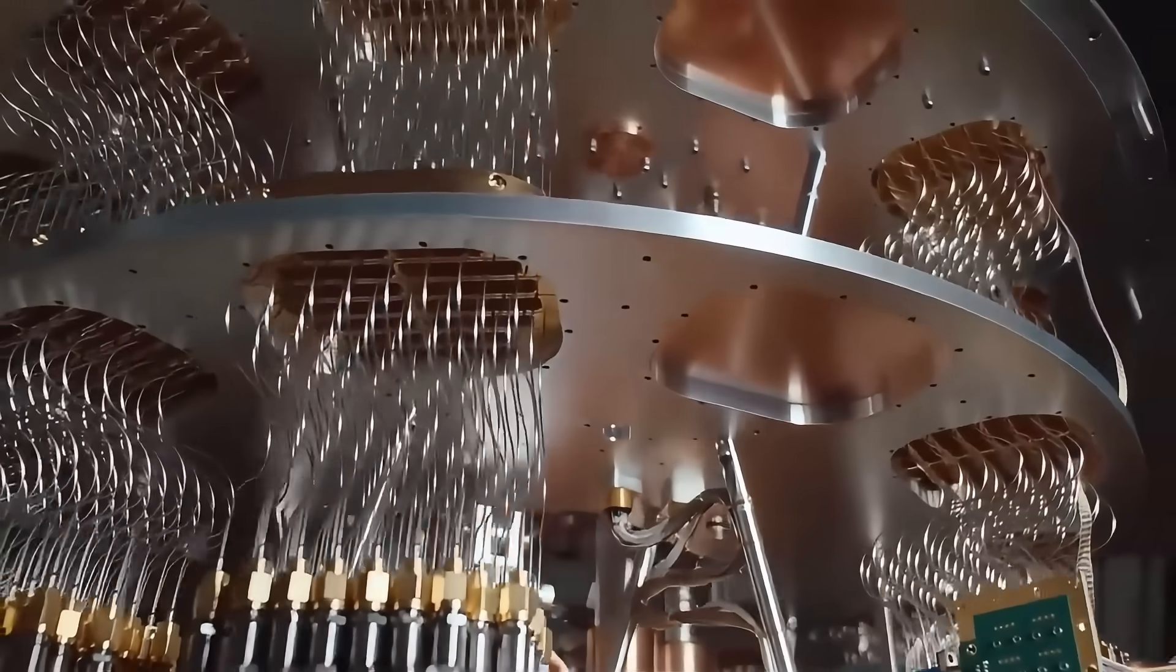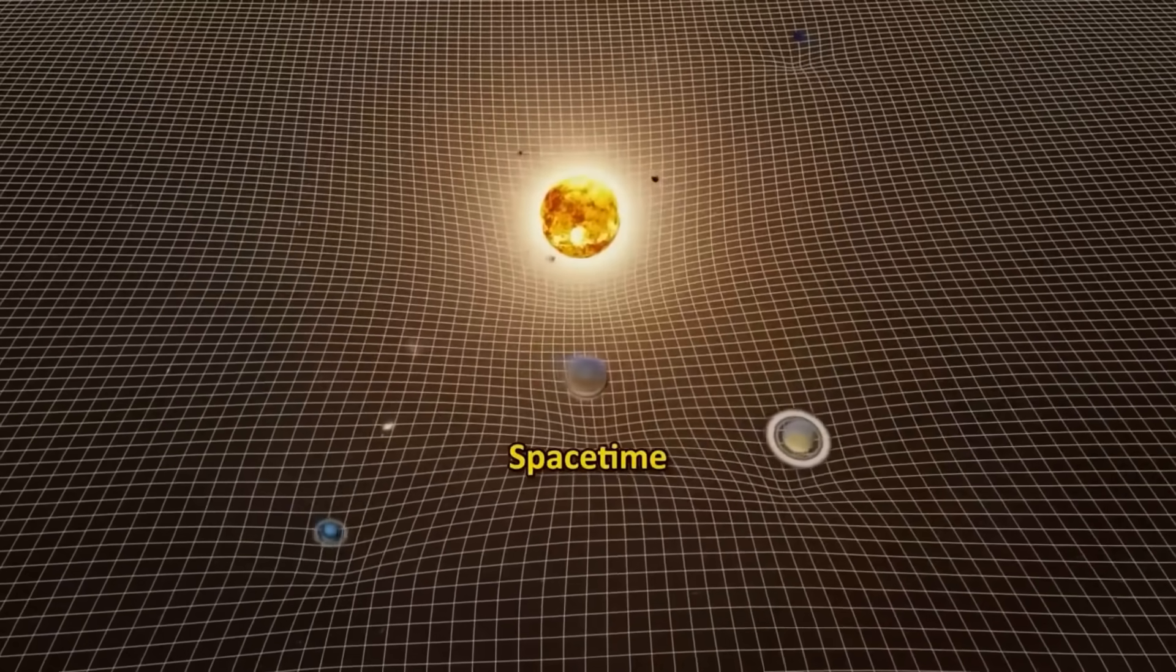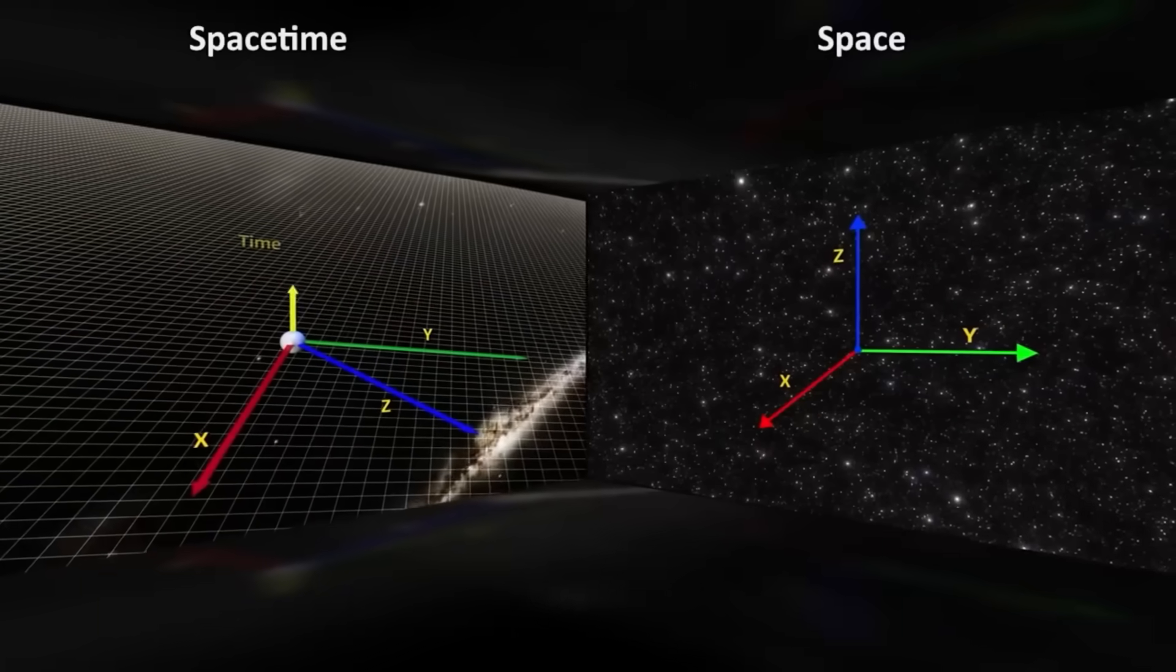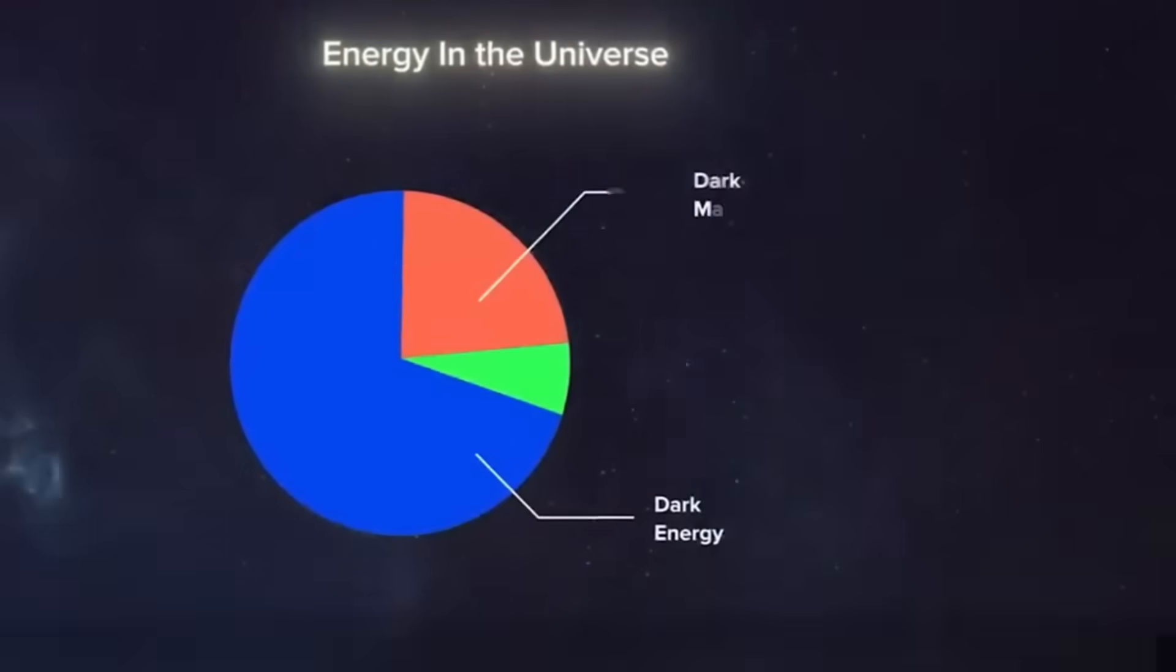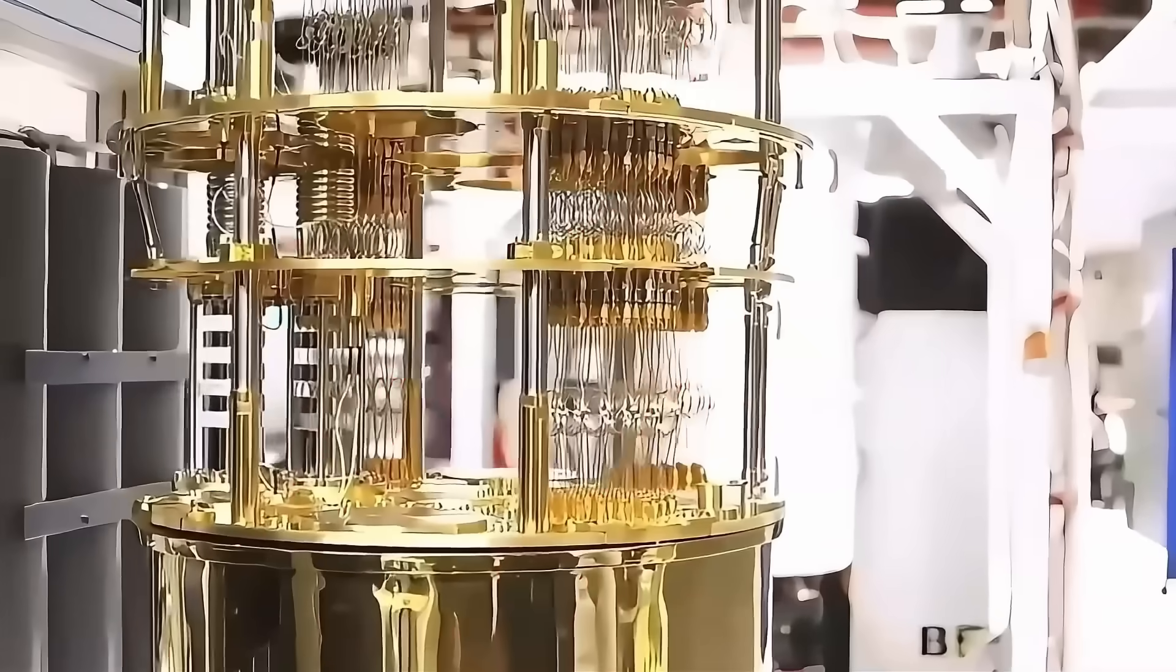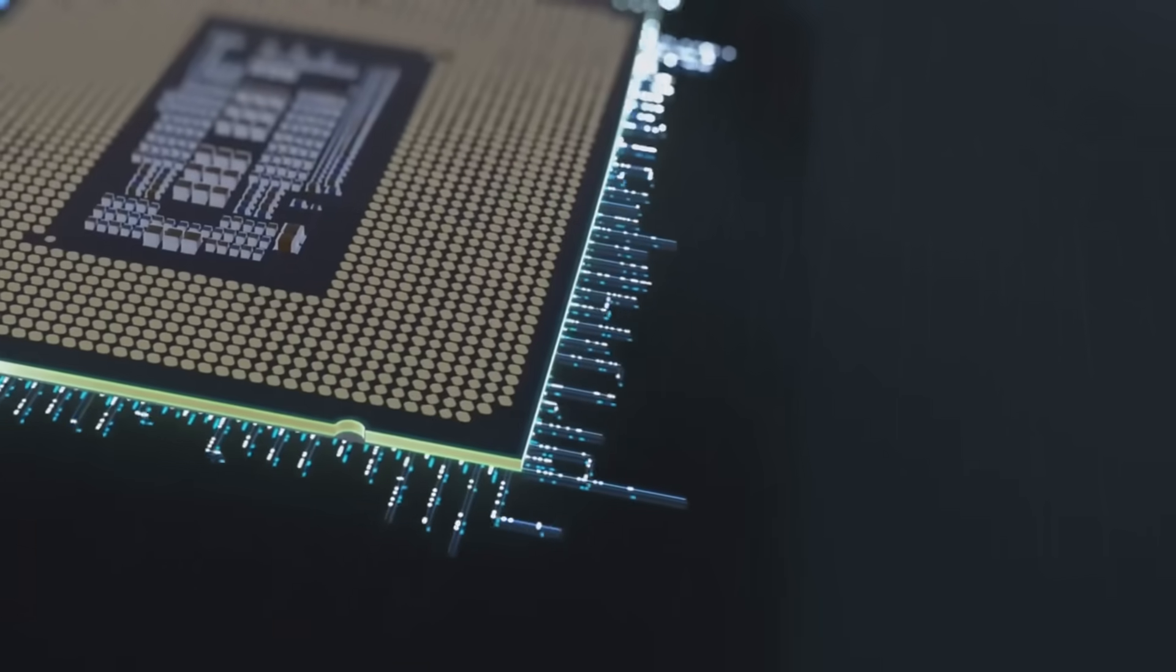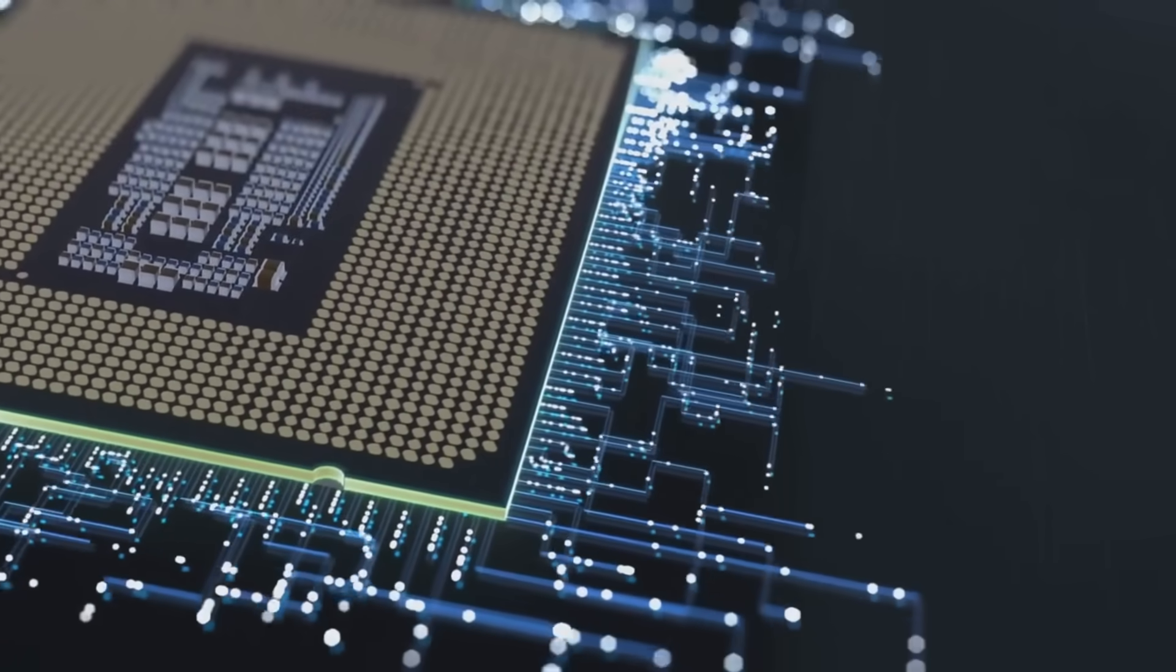As we stand at this crossroads between science and philosophy, one thing is clear. The omega pattern challenges every assumption we've held about randomness, causality, and the origin of structure. In the next segment, we'll dive into the most startling speculation yet, one that could link this pattern to the very geometry of space-time.